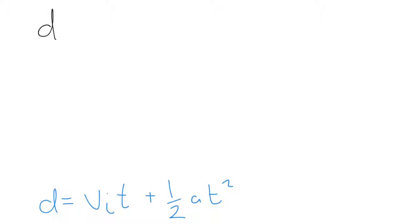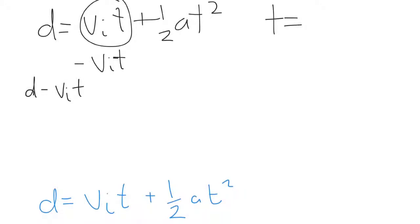So if we're starting off with d equals vᵢt plus half at squared, and we want to make t the subject, so we want to get to t equals something. The first thing we have to do is move this bit to the other side, because it's a positive value, we have to subtract vᵢt from the right-hand side. If we do that to the right-hand side, we've also got to do it to the left-hand side, so we end up with d minus vᵢt equals half at squared.